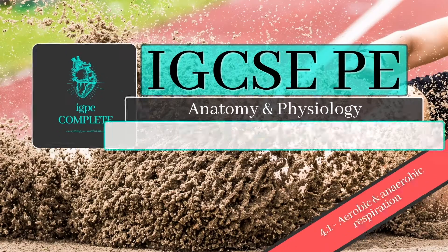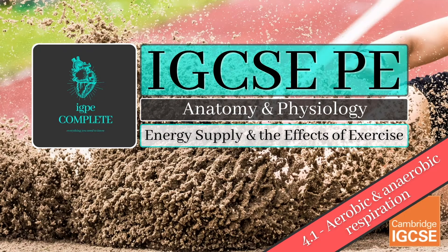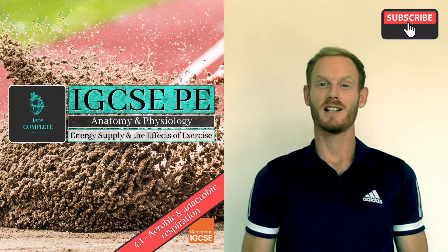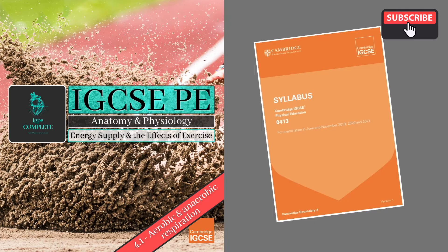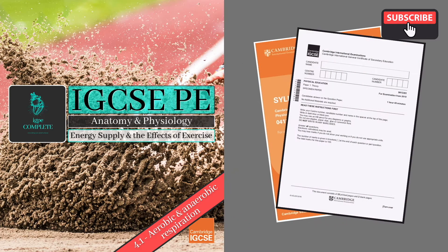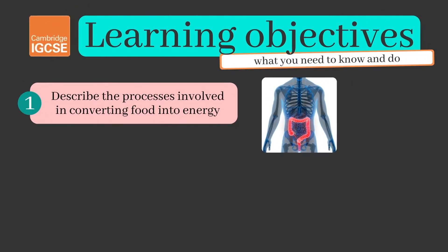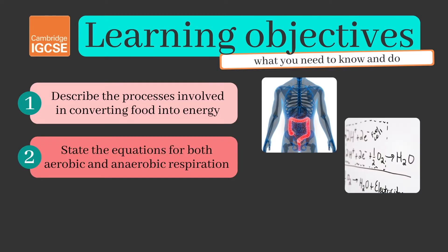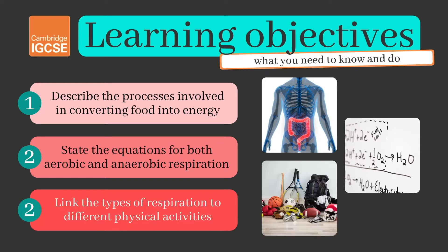Hello and welcome to another complete Cambridge IGCSE PE lesson. We'll learn everything you need to know about aerobic and anaerobic respiration today, the first topic in chapter 4 on energy supply and the effects of exercise on the body. As always we'll be following learning objectives straight from the Cambridge syllabus so that you're fully prepared to sit your final exam. Today you need to be able to describe the process involved in converting food into energy, to state the equations for both aerobic and anaerobic respiration, and to link the use of aerobic and anaerobic respiration to different types of physical activity.